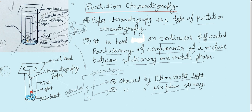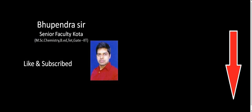Both processes are the same. The only difference is that in the first process we take a paper roll, and in the second one we take a strip of chromatography paper. That is the complete partition chromatography method. I hope you understand partition chromatography. Please like and subscribe, and thanks for watching.